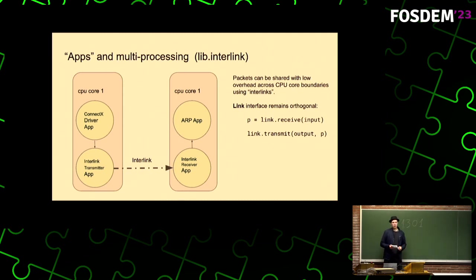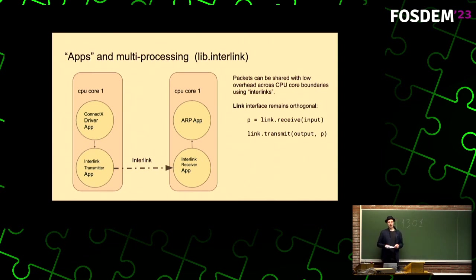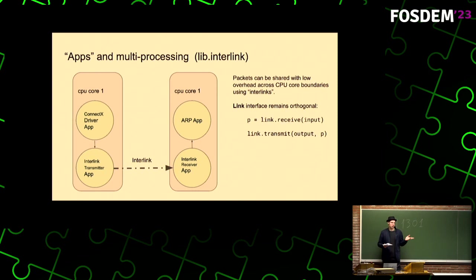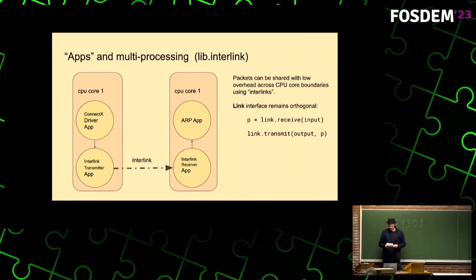To forward packets from one CPU core to another, we have libinterlink. These are just like regular links except that they span process and CPU core boundaries. You can use them just like any link with the same interface, and we use them to implement the software-based receive-side scaling discussed earlier.